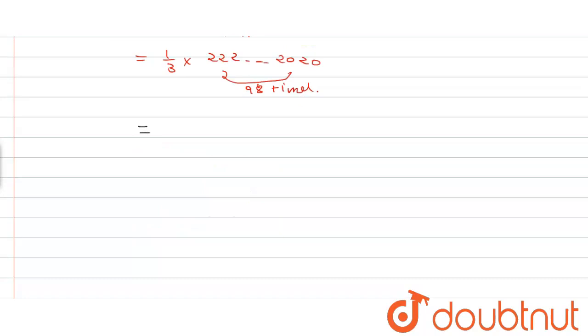By solving this, we get 740740...740740 with 96 digits total.